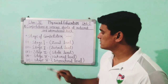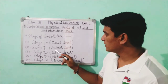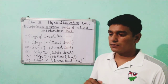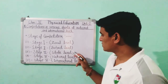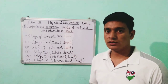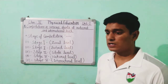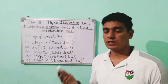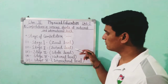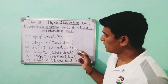Stage three is the State level, where teams from different districts come to play state level matches. For example, our state is Uttarakhand. Different teams from different districts — Nainital, Udham Singh Nagar, Dehradun, Haridwar — will all participate in the state level competition. This is called Stage 3.